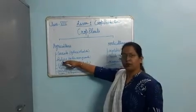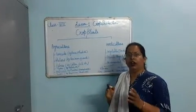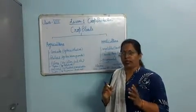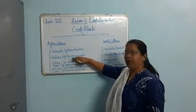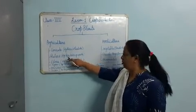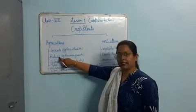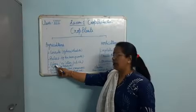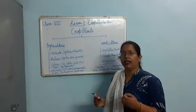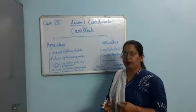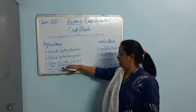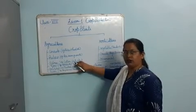The second type is pulses. Pulses are those plants that are grown for proteins — they are a rich source of proteins. Like pea, beans, gram — these types of crops are grown to get pulses. Third is fibers. There are certain crops that are grown to get fiber for clothing, for making bags and other things. We require fiber from the plant, like cotton and jute.